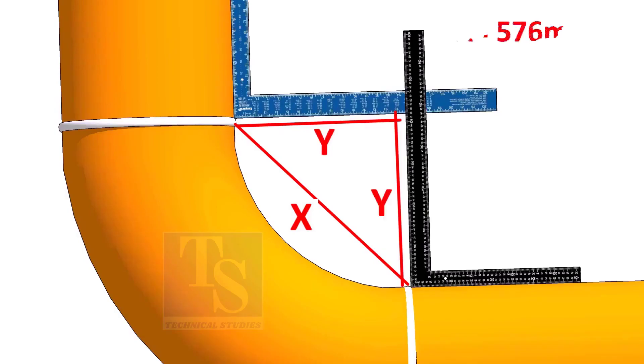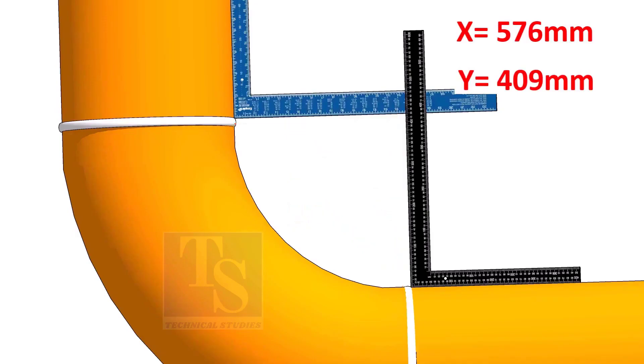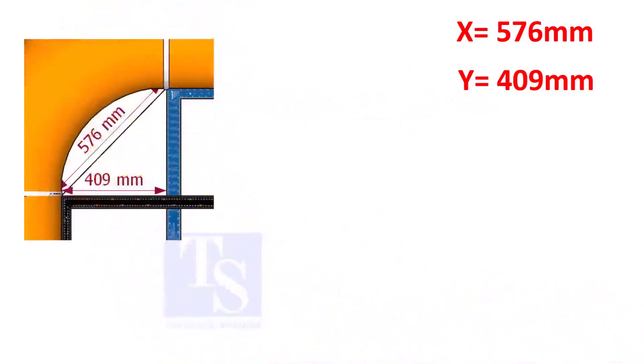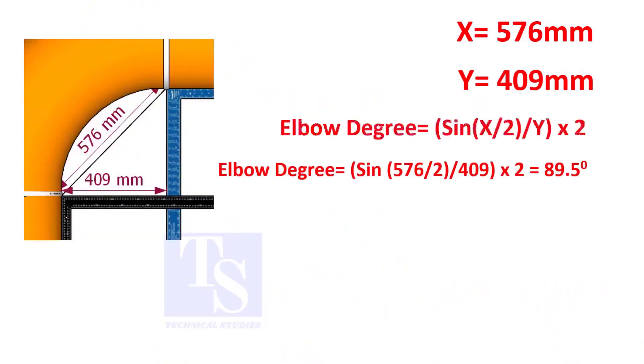Assume that the value of x is 576 and the value of y is 409 millimeters. Apply the formula. The answer is 89.5 degrees.